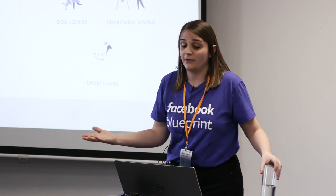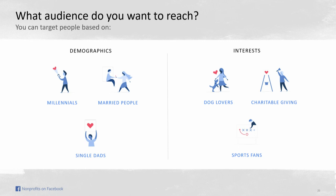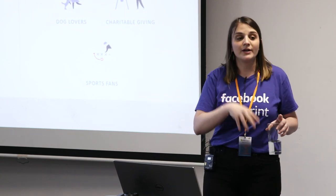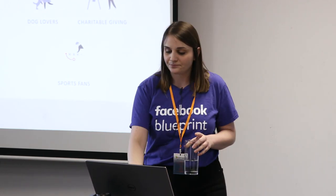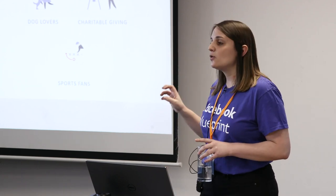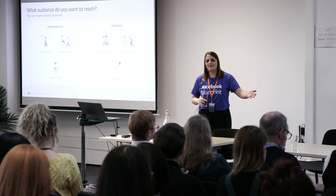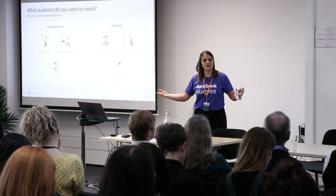Second, what audience do you want to reach? You have the option to reach people through demographics — millennials, single dads, married people — or target people based on interests like dogs, sports, or charitable giving. You can get pretty granular in terms of what kind of people you can reach. Maybe you target one sort of audience for growing awareness and then different people for donations. You don't need a blanket audience strategy for all your initiatives.